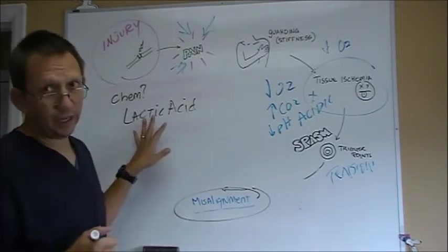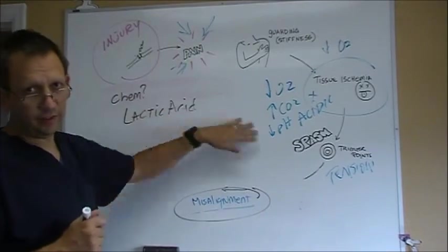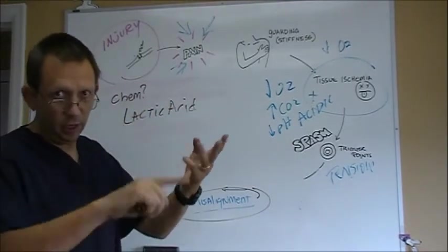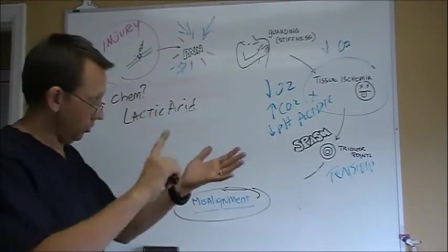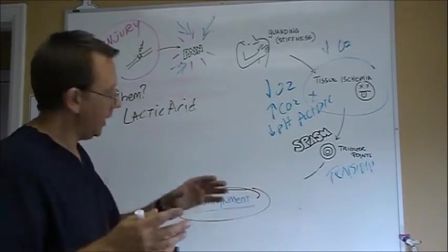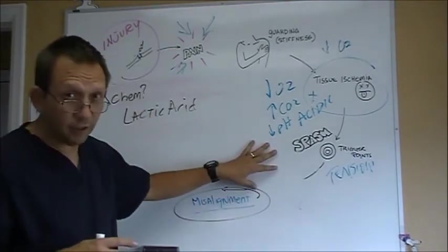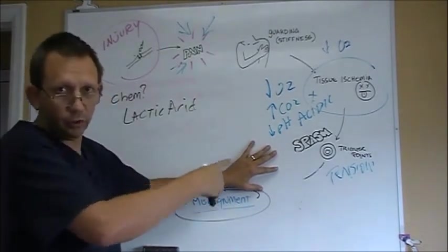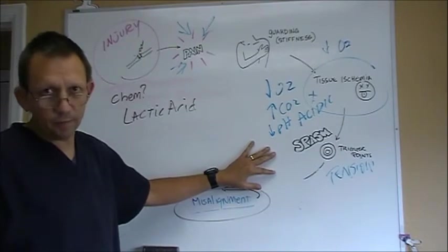That lactic acid, fortunately, is recyclable. It just gets sent to the liver eventually if we can increase the blood flow through massage, through heat, through motion, through manipulation, through adjustments, through whatever. Then we can get this lactic acid to go back to the liver, get recycled, gluconeogenesis, and turn back into glucose to go back. That's easy.